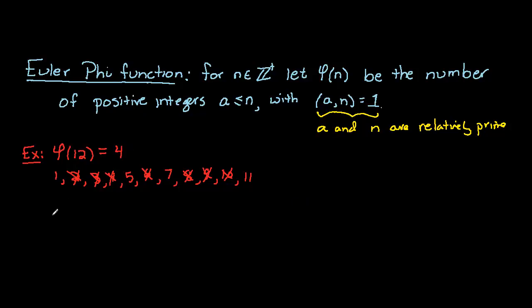Now for larger numbers we wouldn't want to be listing out all of the numbers less than n and computing whether they are relatively prime or not. The whole purpose of having a nice function is that there is a shortcut for calculating the number of integers relatively prime to n. And that formula, the formula for the Euler phi function, works as follows.